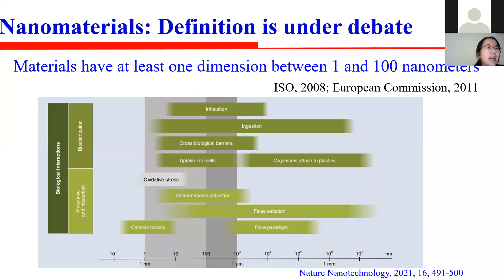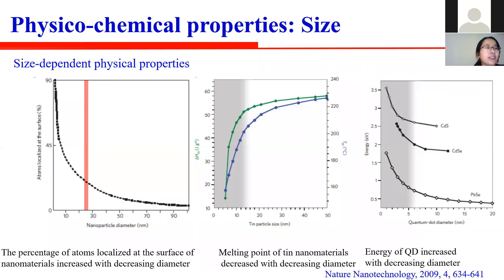For example, at up to 1,000 nanometers, as we can see from this figure, these nanoparticles could still cause biological barriers. So the unique nanoscale features affect the interfacial reactivity and the intrinsic properties of nanomaterials.